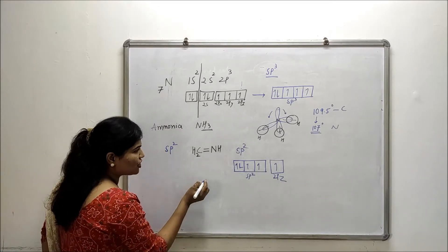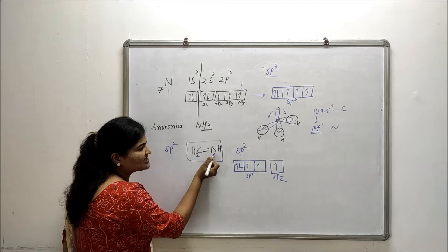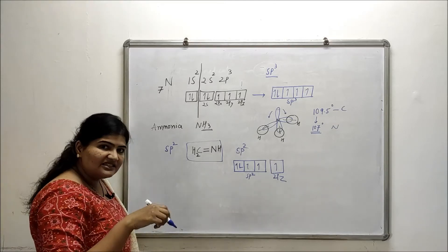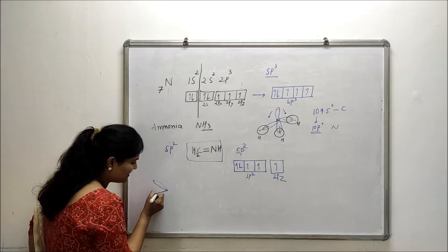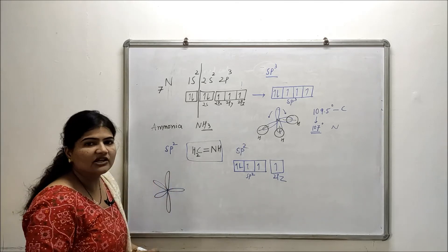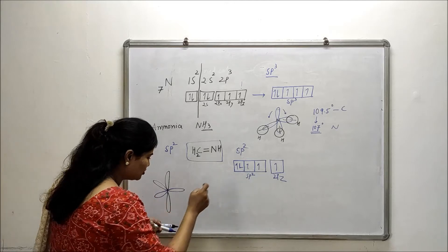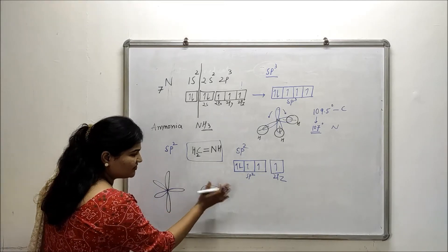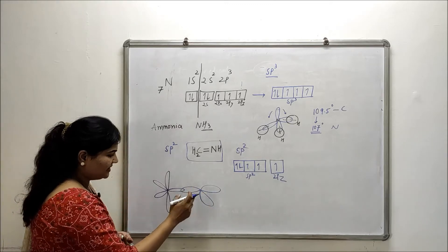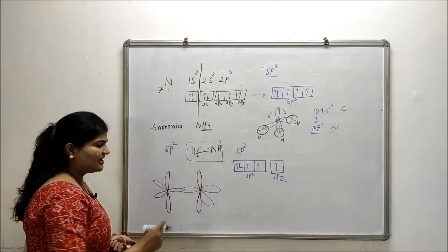In sp2 hybridization, the geometry is trigonal planar. For imine (CH2=NH), carbon is bonded to 2 hydrogens and 1 nitrogen — 3 other atoms — so carbon is also in the sp2 hybridized state with trigonal planar geometry and one unhybridized 2pz orbital extending above and below the plane. Similarly, nitrogen has a lone pair containing orbital and an unhybridized 2pz orbital extending above and below the plane.